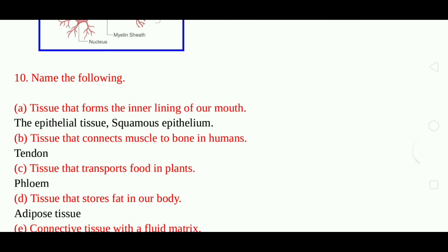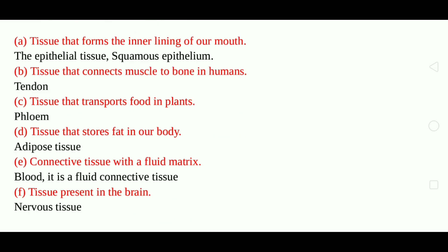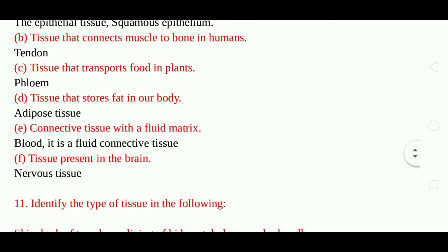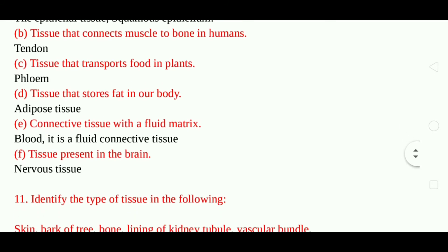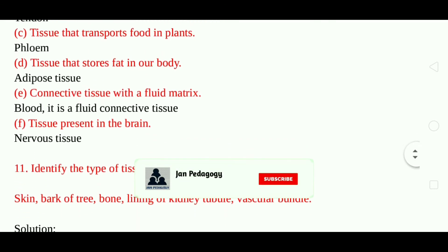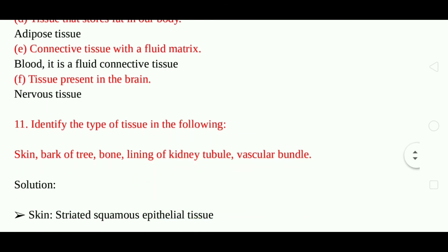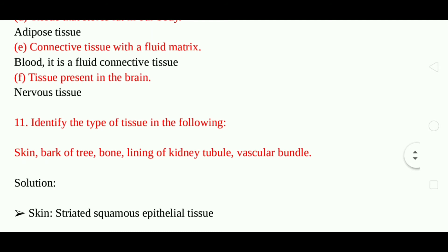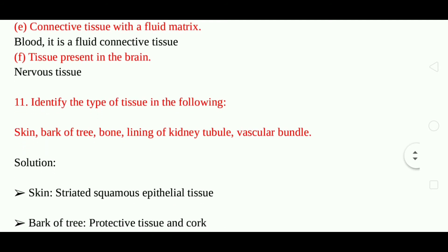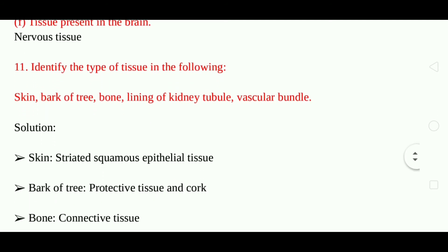Question 10: Name the following. A) Tissue that forms the inner lining of your mouth — the epithelial tissue, squamous epithelium. B) Tissue that connects muscle to bone in humans — tendon. C) Tissue that transports food in plants — phloem. D) Tissue that stores fat in our body — adipose tissue. E) Connective tissue with a fluid matrix — blood, it is a fluid connective tissue. F) Tissue present in the brain — nervous tissue.